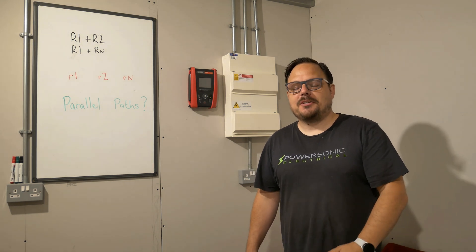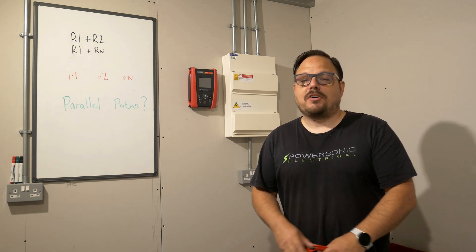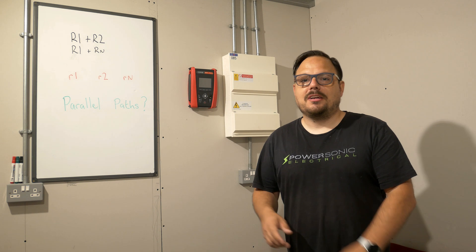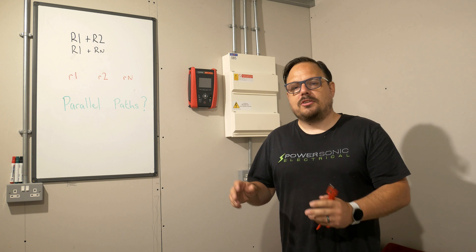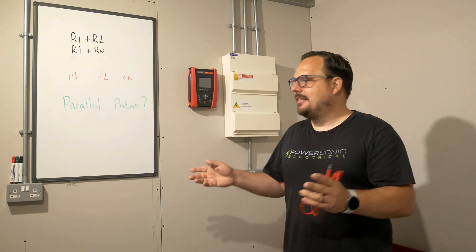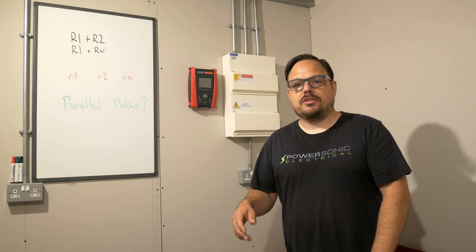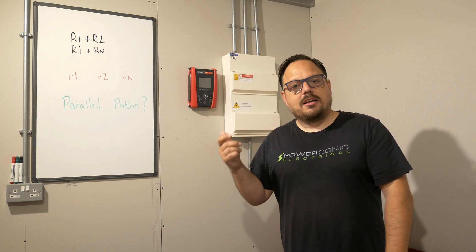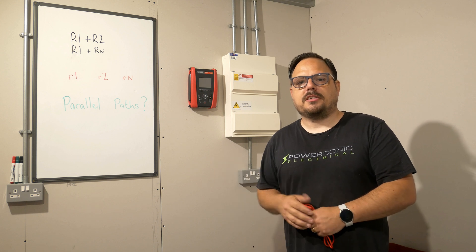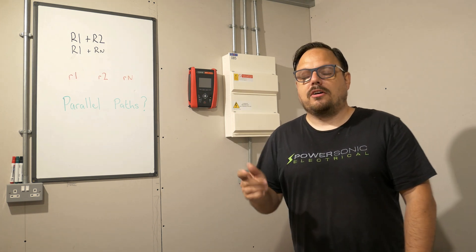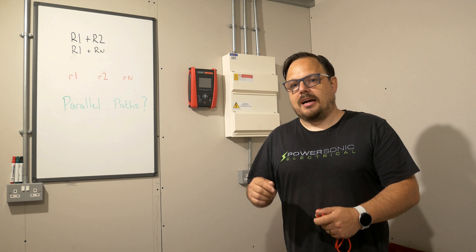Hello and welcome back to the channel, it's Mark from PowerSonic and Apprentice 1 to 1. Today we're going to have a look at some continuity testing involving measurements of little R1, little R2, little Rn, and then big R1, big R2 and big Rn. We're inside the bay here at Apprentice 1 to 1 and we're going to have a look at continuity testing on this socket circuit. This is a radial circuit and it's a different approach if you were testing a ring final — I've covered that earlier on the channel and I'll try and link to it in the description.